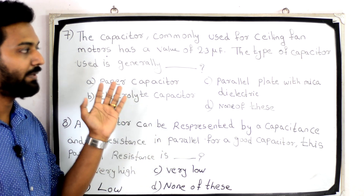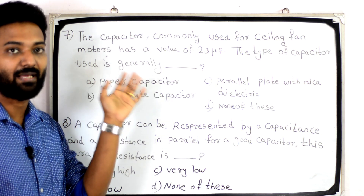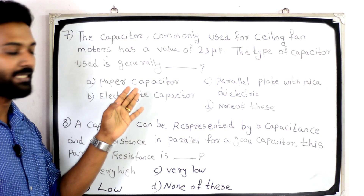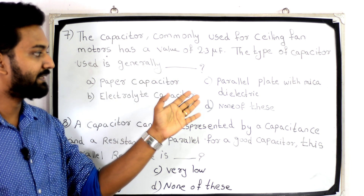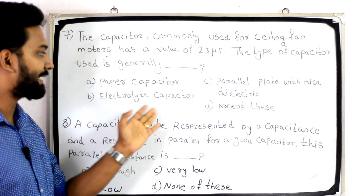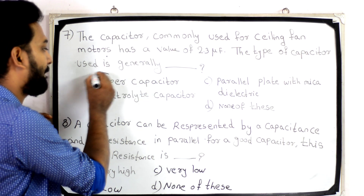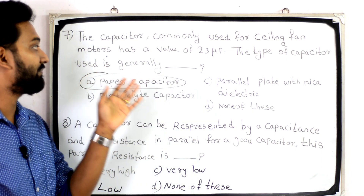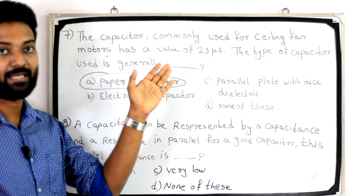The capacitor commonly used for ceiling fan motors has a value of 2.3 microfarad. The type of capacitor used is generally — option: paper capacitor, parallel plate with mica dielectric, electrolytic capacitor, or none of these. The answer is paper capacitors.